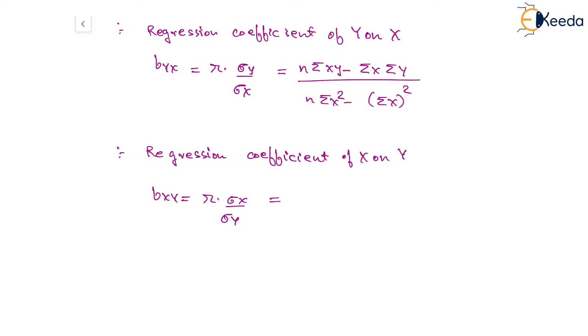And this can also be given as n times product of xy minus product x summation and summation y divided by n times summation of y square minus square of summation of y.